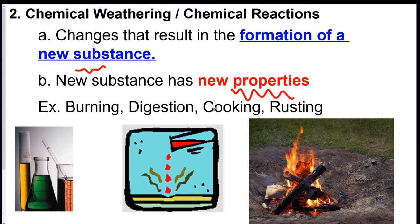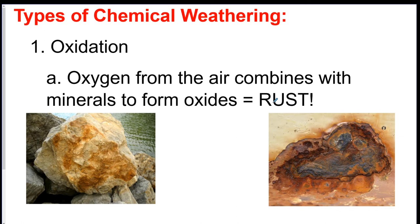A couple of examples of chemical reactions are burning, digestion, cooking something, or rust. We're going to go through each type — there's really not that many. The first one is called oxidation. It's the fancy science word for rusting.